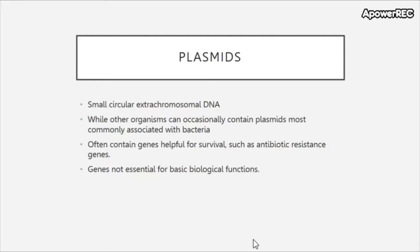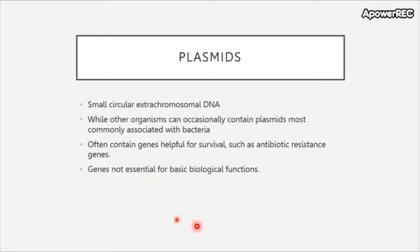Plasmids are much smaller than the chromosomes — they are very small and always circular, meaning they don't have an end. Plasmids are associated with bacteria. They often contain helpful genes for survival such as antibiotic resistance or resistance to other sorts of stresses; however, these genes are not essential for basic biological functions. So you won't have genes encoding for the cell wall, ribosomes, or producing ATP — these are extra genes that help them under certain circumstances.